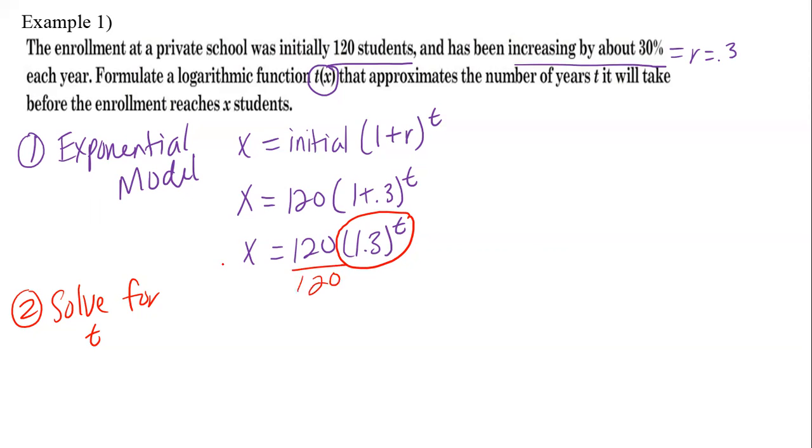I'm going to divide by 120. Okay, so now I have x divided by 120 equals 1.3 to the t. So that's step one.